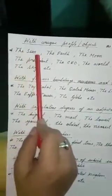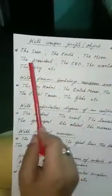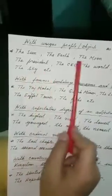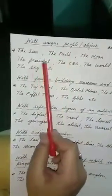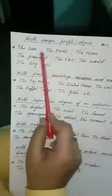With unique people or objects you have to put the sun, the earth, the moon, the president, the CEO, the world, the sky. So before unique people and objects you are using THE. You have to put THE always.